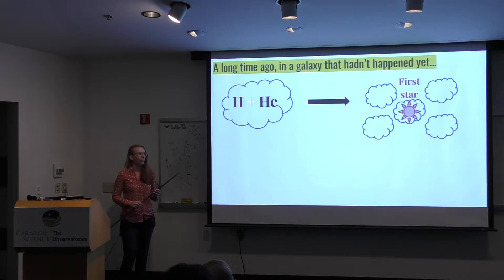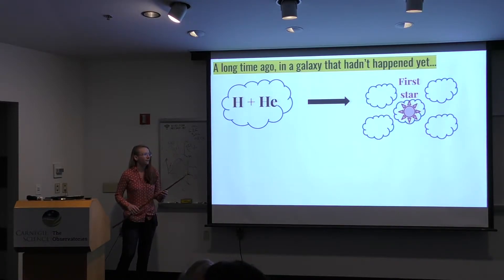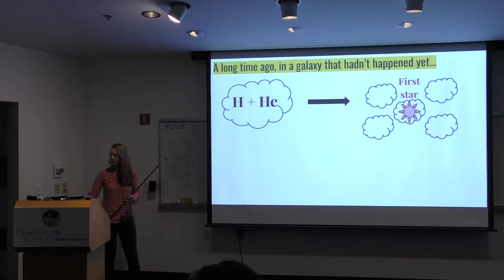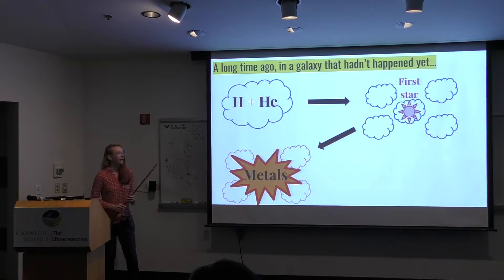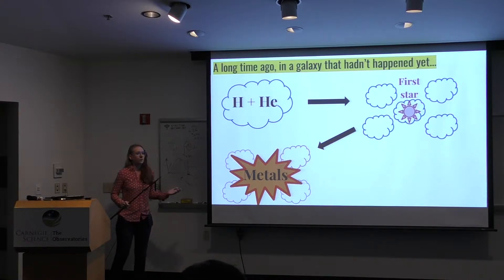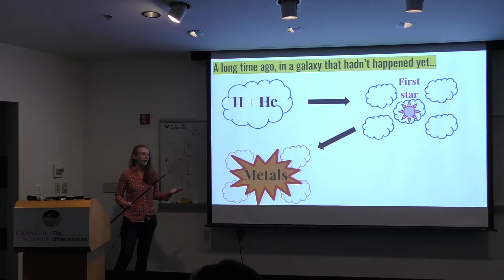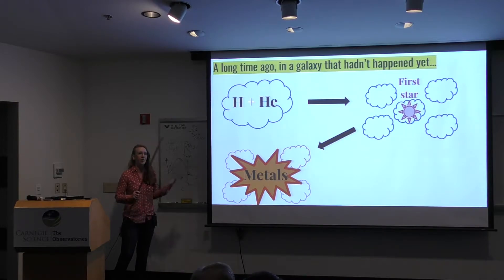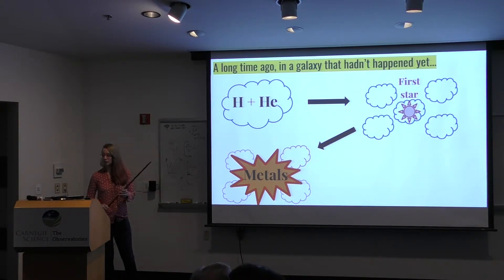In these little proto-galaxies, which we call halos, they usually only have one or two, or even no stars in them. Eventually, these stars, because they're so massive, live very short lives and go supernova. They expel all their metals out into the halo that they live in, and they can also enrich other halos.